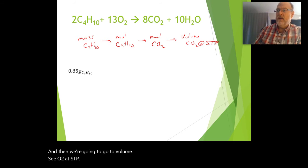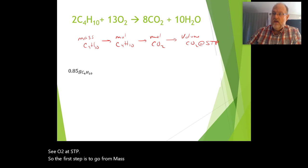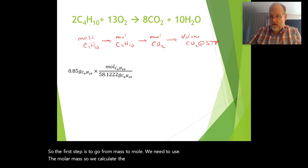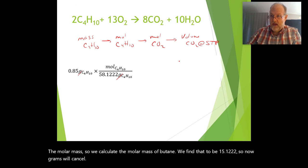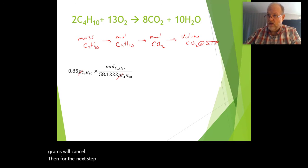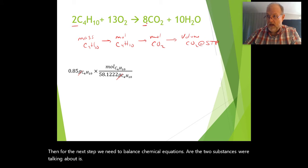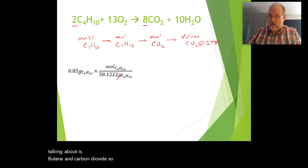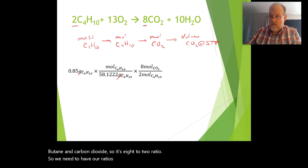The first step is to go from mass to mole. We need to use the molar mass, so we calculate the molar mass of butane. We find it out to be 58.122. So now grams will cancel. Then for the next step, we need the balanced chemical equation. The two substances we're talking about is butane and carbon dioxide, so it's an 8 to 2 ratio. The 2 goes on the bottom, the 8 goes on the top.